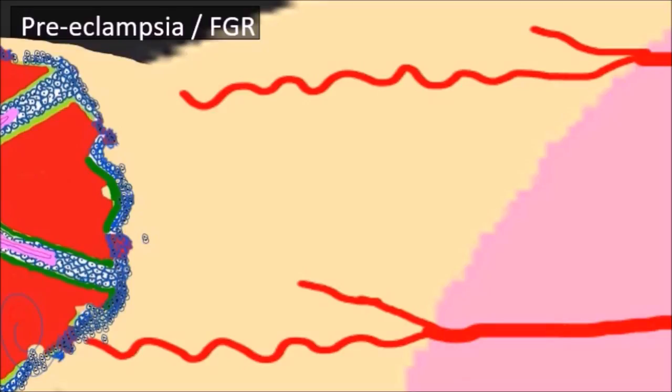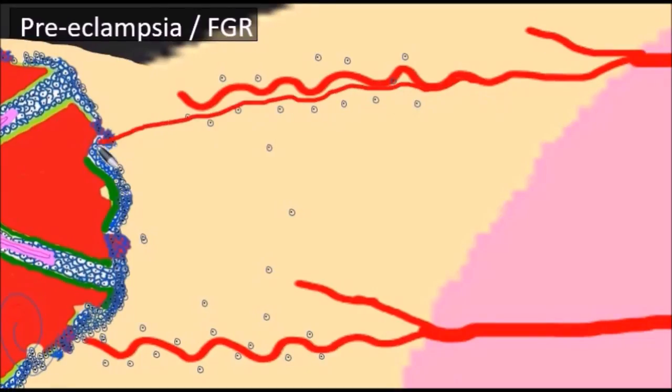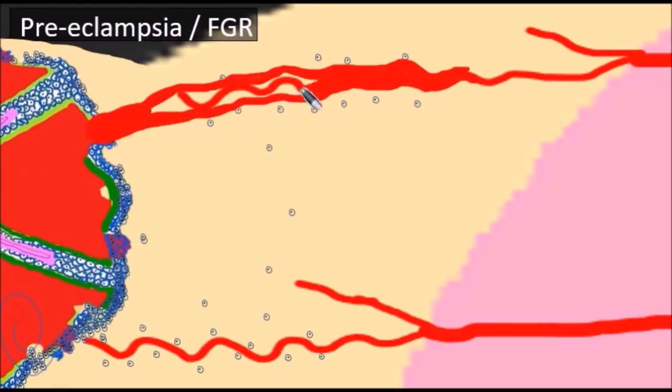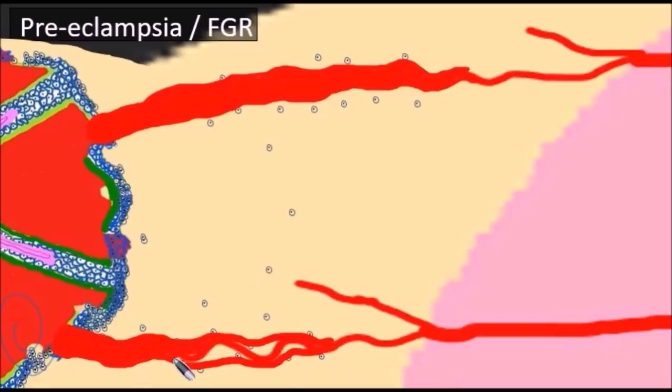During pregnancy with abnormal placentation, like in cases of preeclampsia or fetal growth restriction, the trophoblastic invasion is inadequate. Few cells invade the decidua and do not reach the myometrium. This consequently results in inadequate remodeling of the spiral arteries.